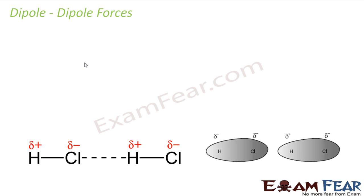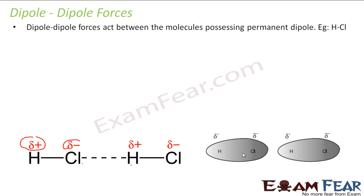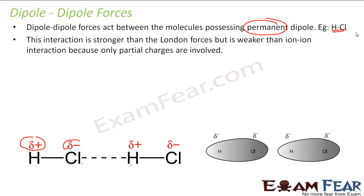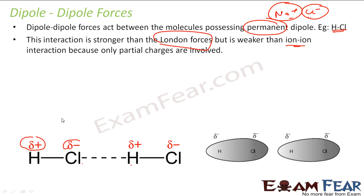Dipole-dipole force: for example in HCl, the chlorine has slightly negative charge because it is more electronegative, and hydrogen has slightly positive charge. Adjacent HCl molecules attract each other — this is the dipole-dipole force, acting between molecules that have a permanent dipole. This interaction is stronger than London force but still weak — weaker than ion-ion interaction, for example Na⁺ and Cl⁻, which carry full charges rather than partial charges.